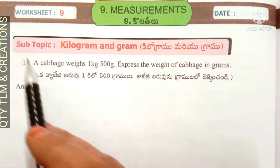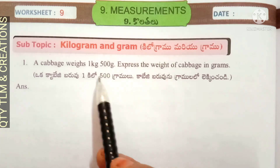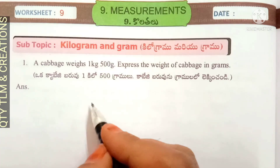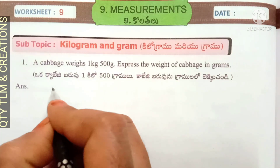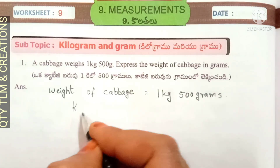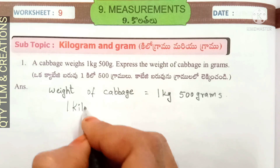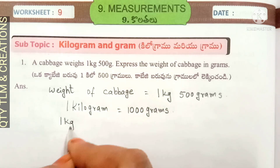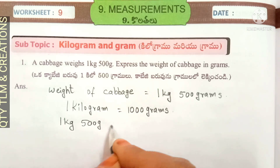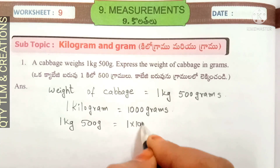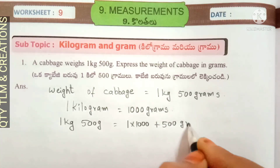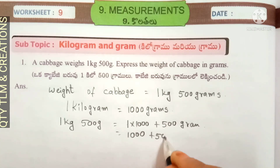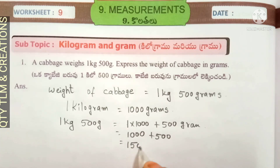Next, worksheet number nine, subtopic kilograms and grams. First question: a cabbage weighs one kg 400 grams. Express the weight of cabbage in grams. Weight of cabbage is equal to one kg 400 grams. We know that one kilogram is equal to 1000 grams. 1 kg 400 grams is equal to 1 into 1000 plus 400 grams, which is 1000 plus 400, that is equal to 1400 grams.